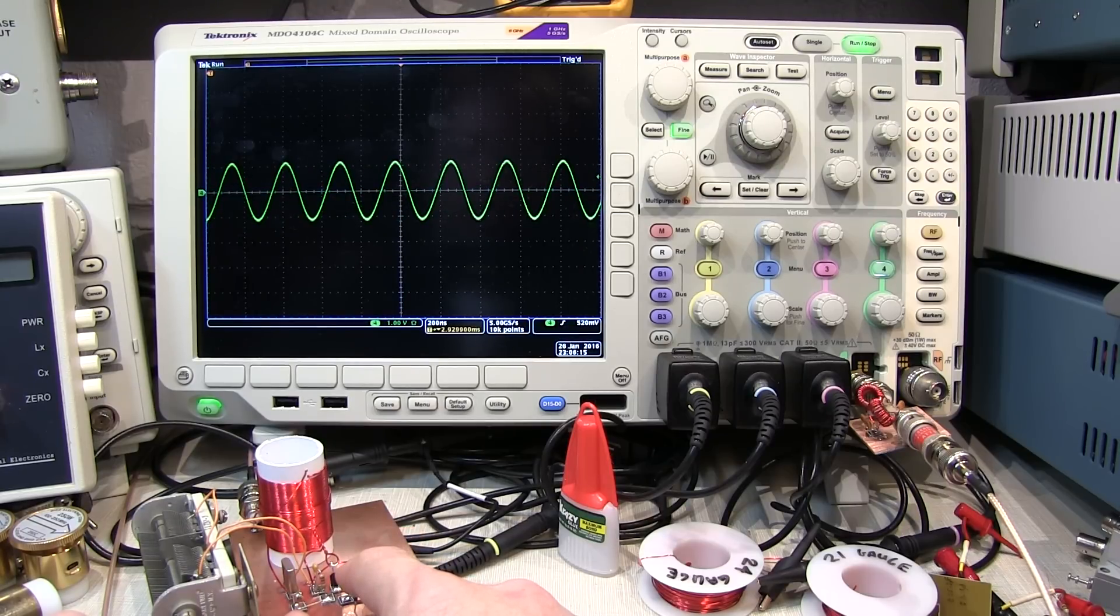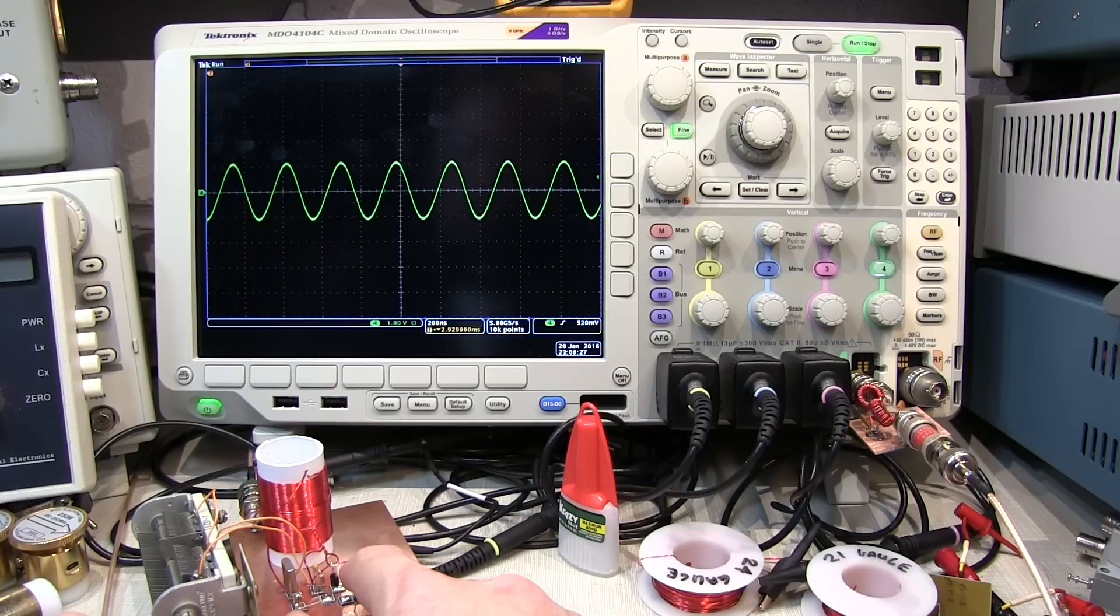Wow, it looks almost like a perfect sinusoid. And the truth of the matter is that once harmonic distortion is down below about 30 dB down or more, it's very difficult to visually see any distortion in the sine wave. So, most folks would say this is probably good enough to get on the air with, and they'd probably be right.